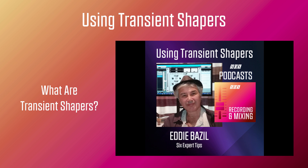Different transient shapers behave in different ways and offer different tools to process each part, but ultimately they all strive to do the same thing: to allow processing of both the attack transients and sustain release portions of a sound independently before being combined at the output stage. Transient shapers can dynamically alter a sound's response and have become excellent sound design and mixing tools. Simple transient boosts can often yield better results than broadband equalizer boosts when trying to get a sound to cut through the mix.